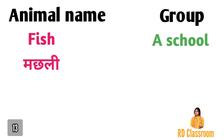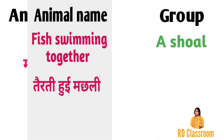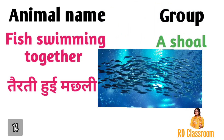Number thirteen is fish, ya fir machli, jiske group ko kaha jata hai a school. Number fourteen is fish, jiske group ko kaha jata hai a shoal — so please distinguish between the two.